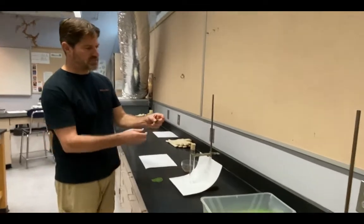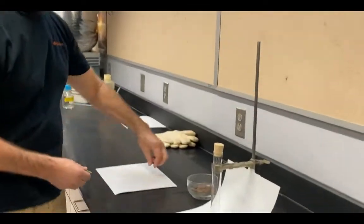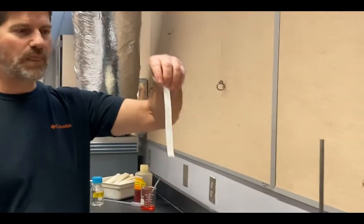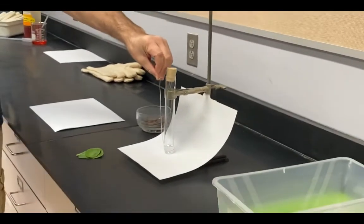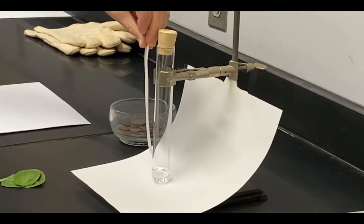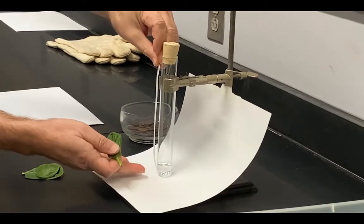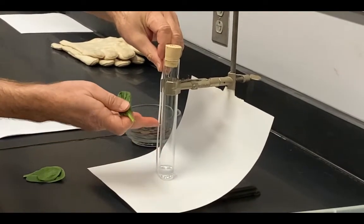So I have here a number of spinach leaves. I have some chromatography paper. I'm going to eventually place that in here and what we're going to do is we're going to have a solvent pick up the pigments and move them up the paper.